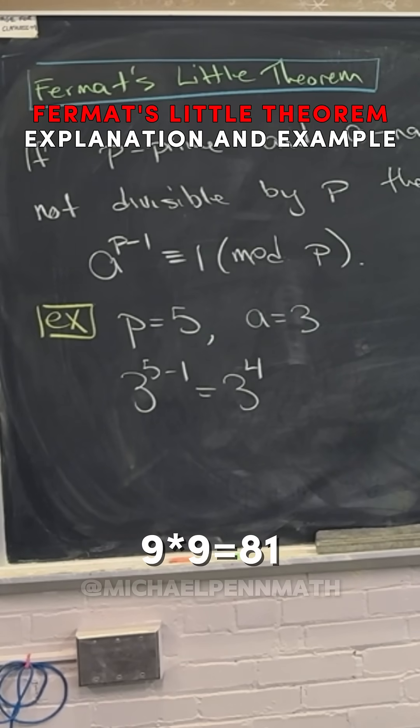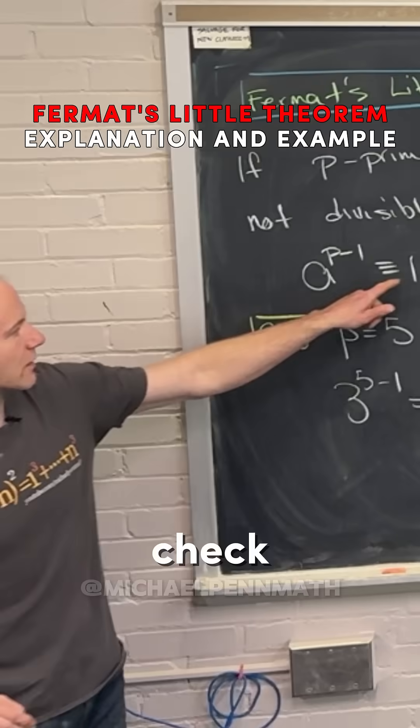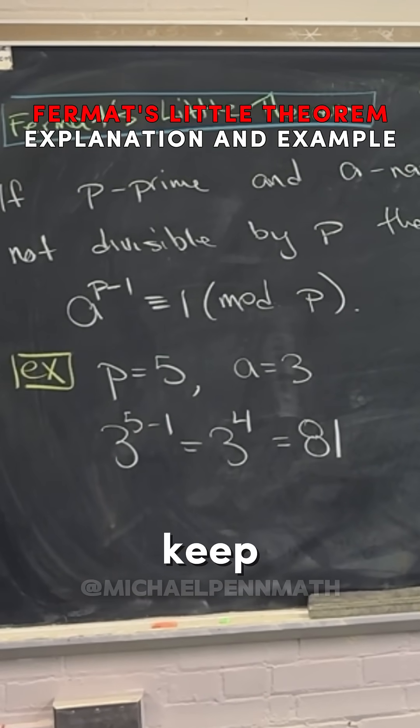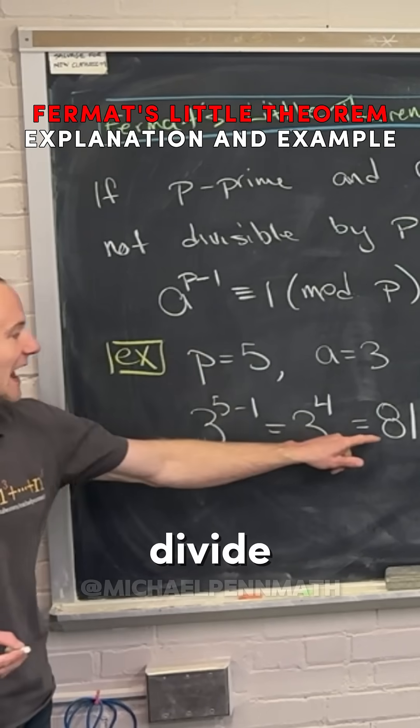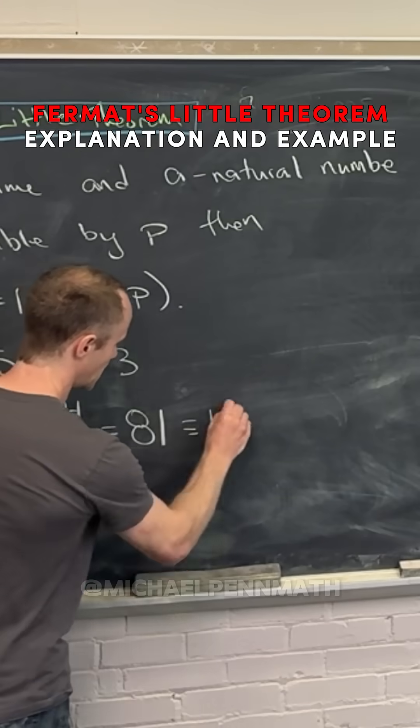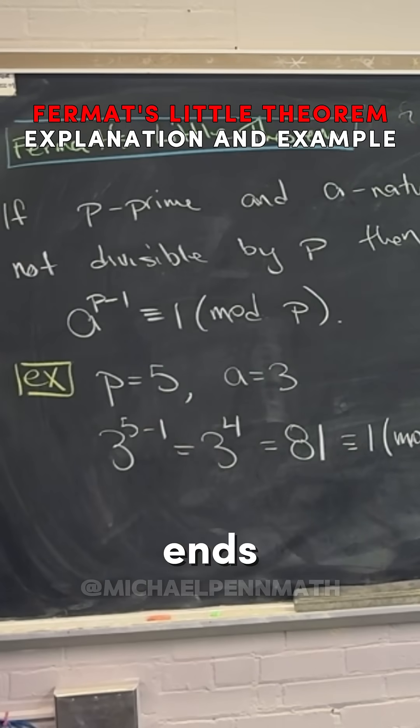So this equals 81. Check it out - reducing mod something really just means you divide by that thing and keep the remainder. What happens if you divide 81 by 5 and keep the remainder? It'd be 1.